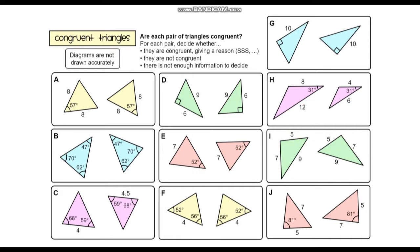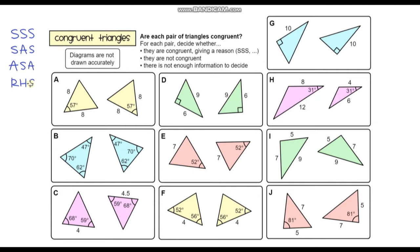We came up with SSS, or side, side, side. We had SAS, or side, angle, side. We had ASA, or angle, side, angle. And the last one was RHS, which refers to right angle triangles — if we have two right angle triangles where the hypotenuses are the same and one of the other side lengths is also the same, then we know for sure that those two triangles are congruent.